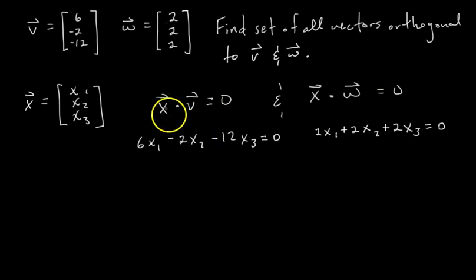Let's write those two equations out. I did the dot product X·V: 6X1 - 2X2 - 12X3 = 0, because we want X to be orthogonal to V. Then I do the same thing with X·W and get the second equation. This is two equations with three unknowns.